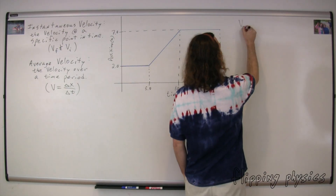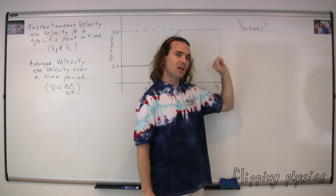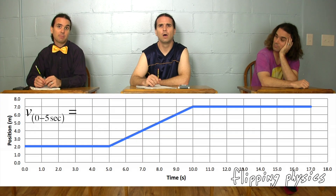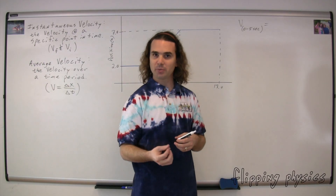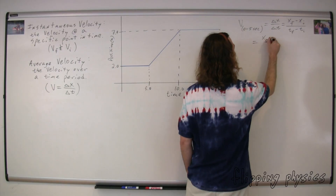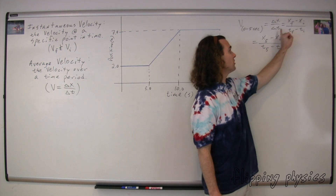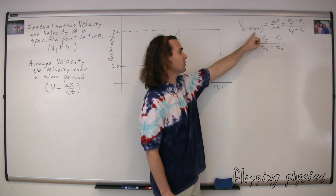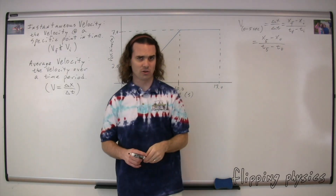First, what is the velocity from zero to five seconds? When I ask for the velocity from zero to five seconds, am I asking for an instantaneous velocity or an average velocity? Because you are asking from zero to five seconds, it must be an average velocity, because from zero to five seconds that's a time period. Therefore, we need to use the equation for average velocity, which is change of position over change in time. Delta always means final minus initial. Therefore, on the top we get position final minus position initial, and on the bottom we get time final minus time initial. We know our final is at five seconds and our initial is at zero seconds.